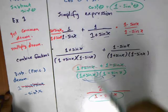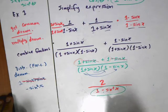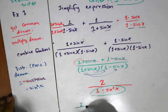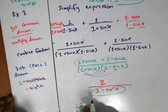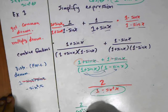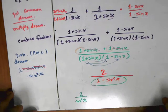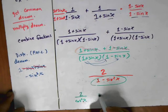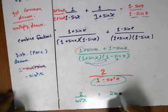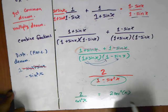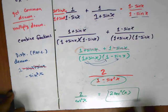In this case, 1 minus sine squared theta equals cosine squared theta, so I can take this and substitute it in here. Now what you have is 2 over cosine squared x, which is equal to 2 secant squared x. This is about as simple as it's going to get.